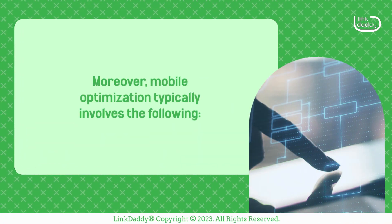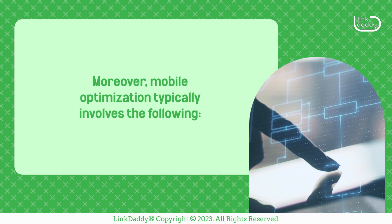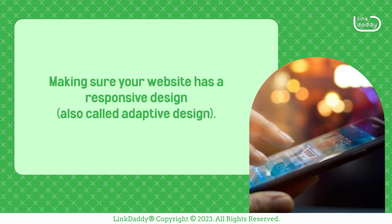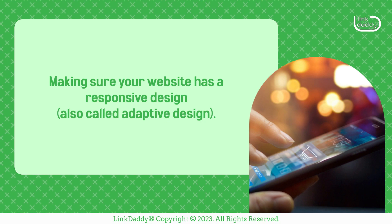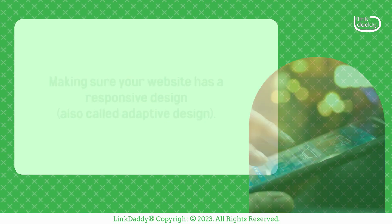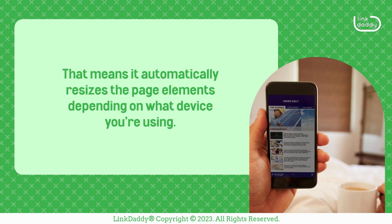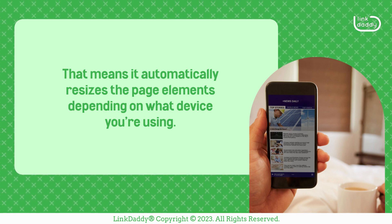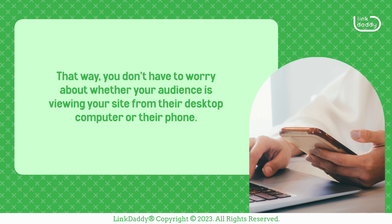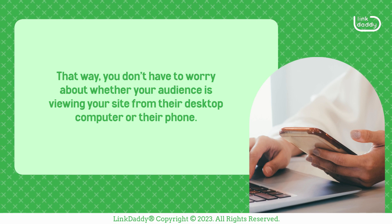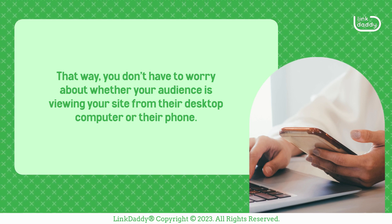Moreover, mobile optimization typically involves the following. Making sure your website has a responsive design, also called adaptive design. That means it automatically resizes the page elements depending on what device you're using. That way, you don't have to worry about whether your audience is viewing your site from their desktop computer or their phone.